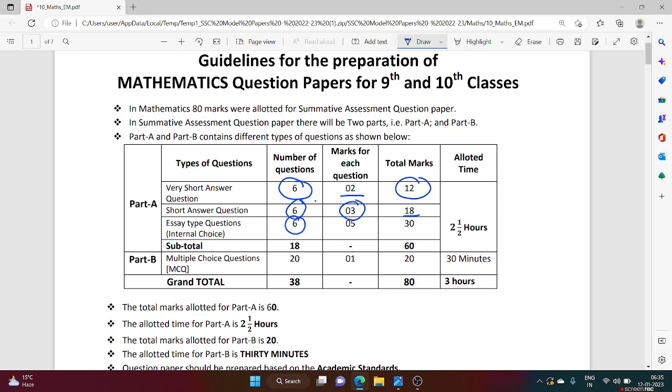Now six essay questions, you should answer all six here also. Each question carries five marks, so total six times five is 30. But here you have internal choice in the essay questions, which means in one question you have two bits, A and B. Out of A and B, you can answer A or B, any one. This is the pattern previously which you had.